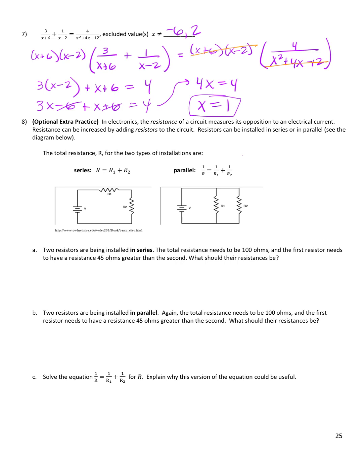Number 8 is an optional extra practice problem. In electronics, the resistance of a circuit measures its opposition to an electrical current. Resistance can be increased by adding resistors in series or in parallel. When installed in series, the total resistance is the sum of the two resistors R1 and R2. When installed in parallel, 1 over the total resistance equals 1 over R1 plus 1 over R2. Two resistors are being installed in series, so R equals R1 plus R2, with a total resistance of 100 ohms, and R1 must be 45 ohms greater than R2.